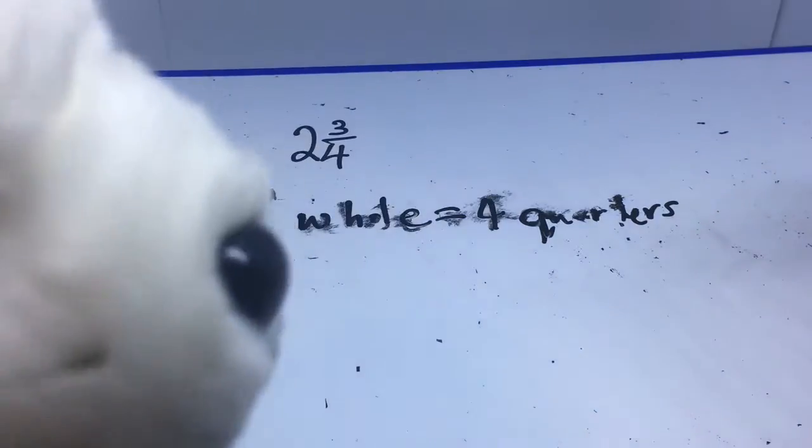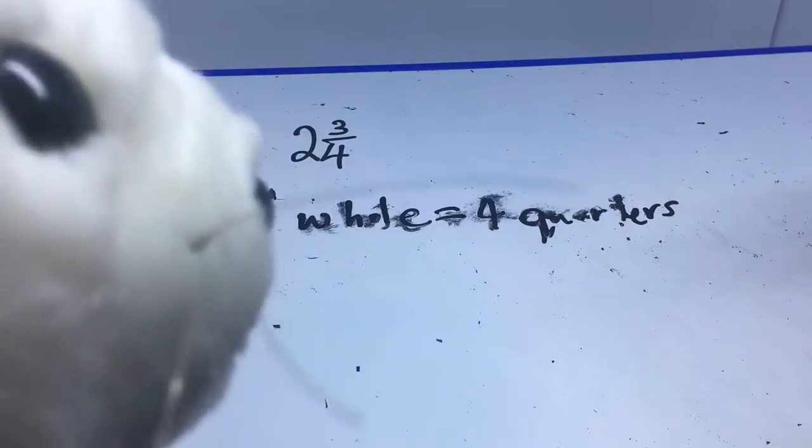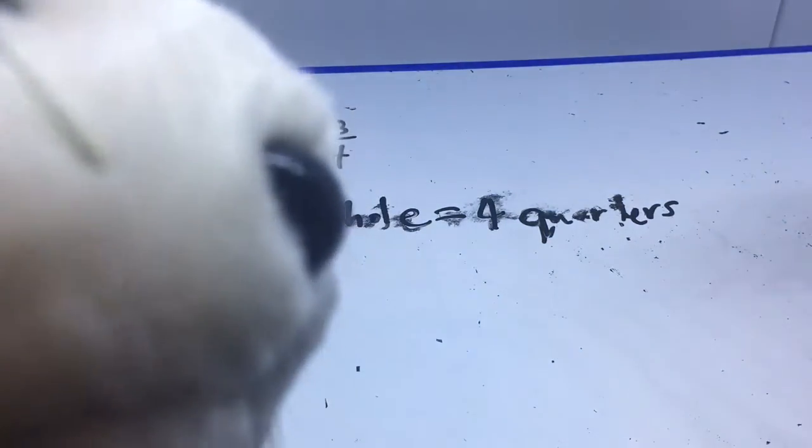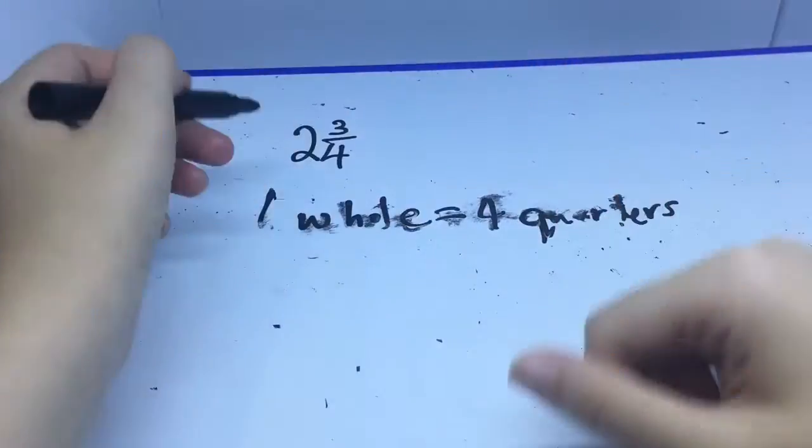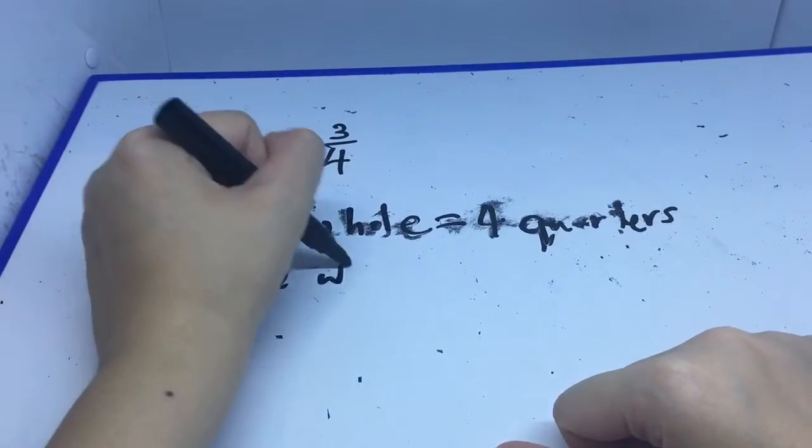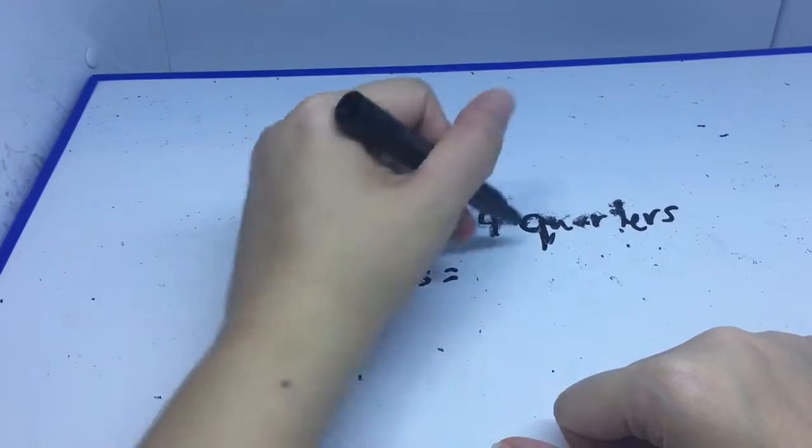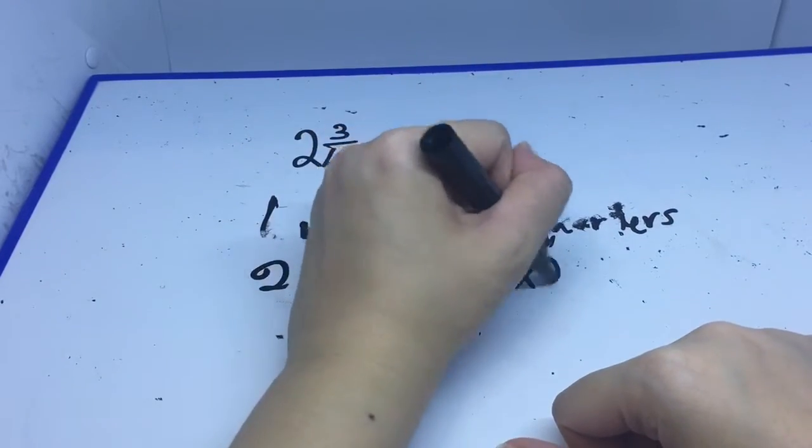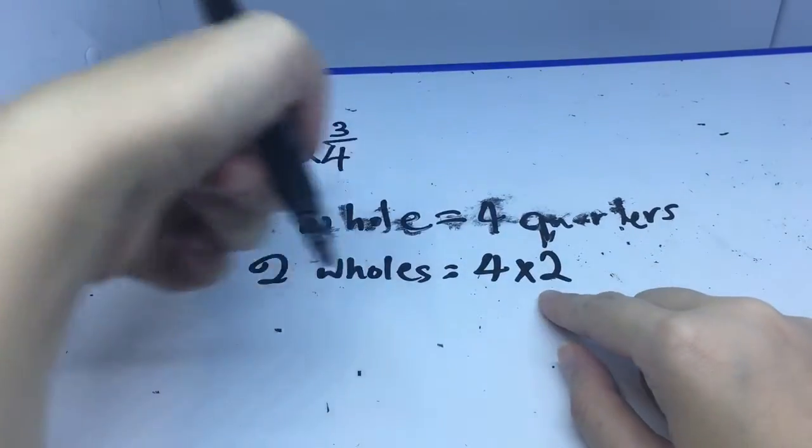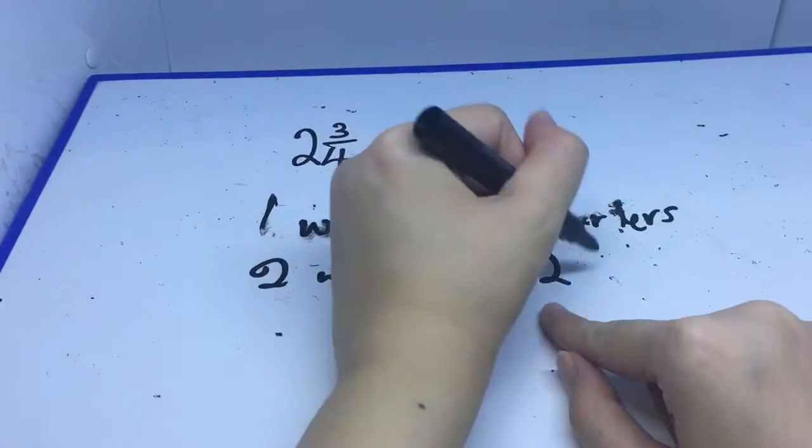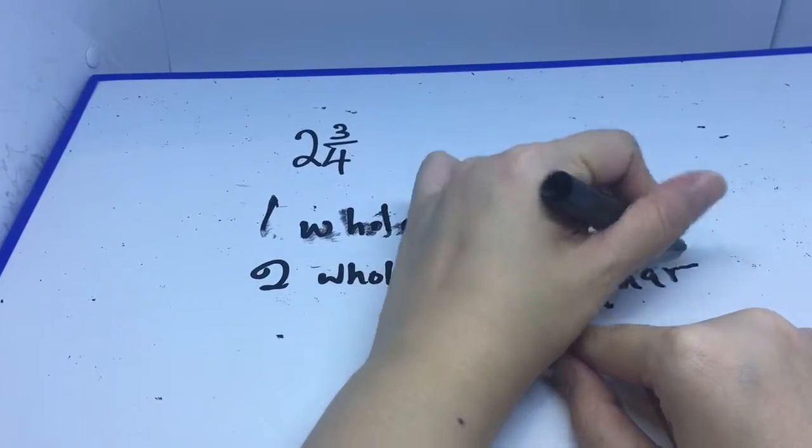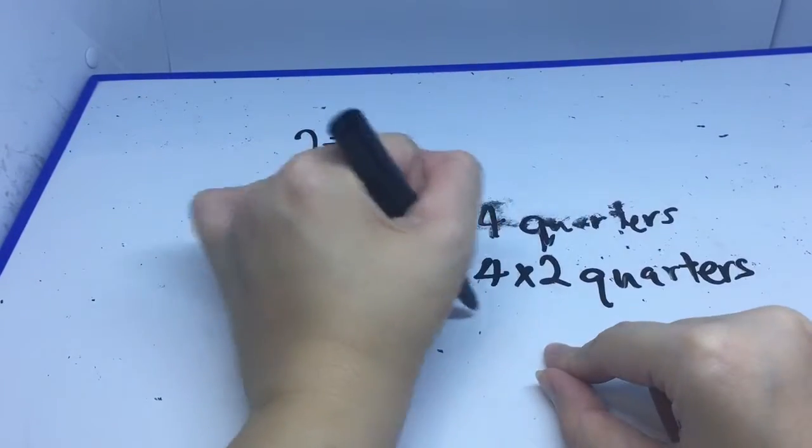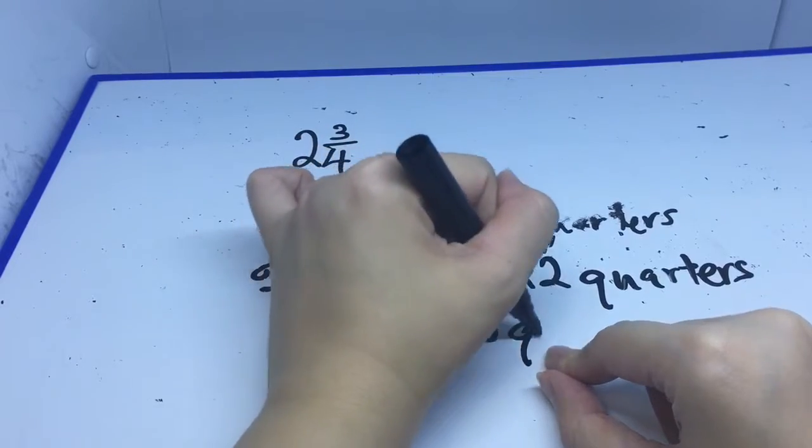And I know that two wholes equals to how many quarters? Well, two wholes would be four times two because one whole, four quarters, two wholes, four times two quarters, which would give me eight quarters.